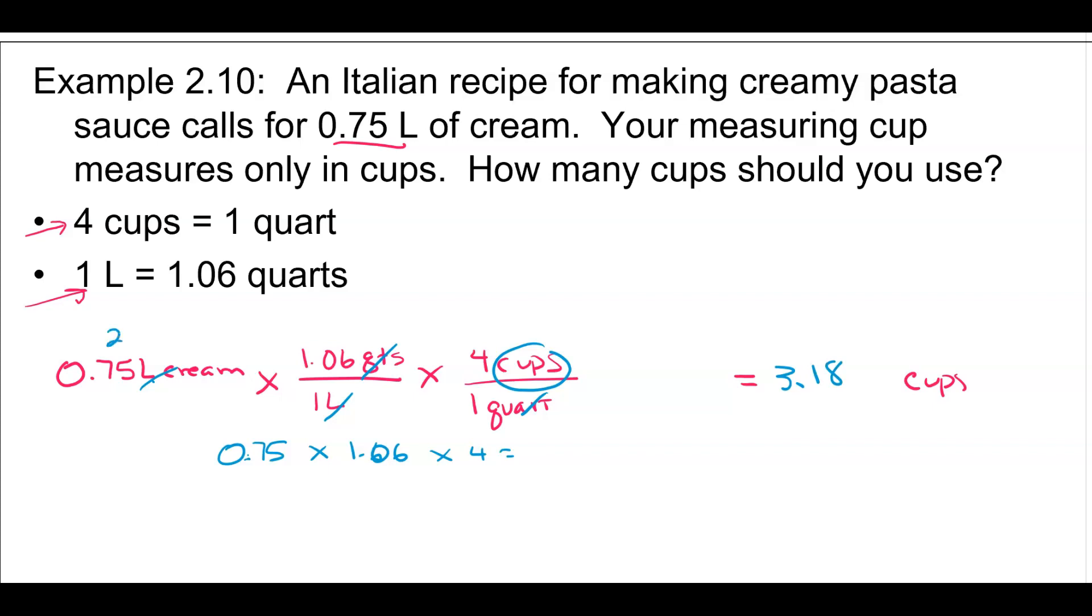Now I have two sig figs here, I have three sig figs here. I only have one, but this is an exact quantity, because it's a conversion from within a system. So this is an exact relationship. So I can have two sig figs in my answer, and that would be 3.2 cups of cream.